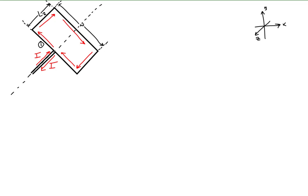Segment 1 is the segment where the current first enters, heading up the loop until it reaches segment 2. The current then moves away from us in segment 2 until it reaches segment 3. At segment 3, the current moves down until it reaches segment 4. Along segment 4, the current is coming towards us until it finally returns along segment 1.